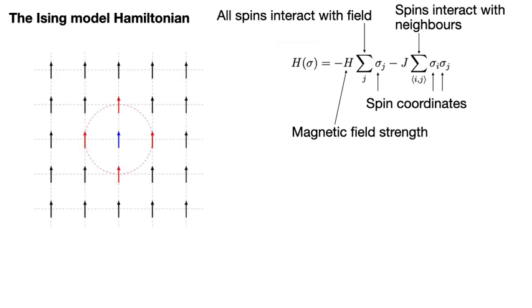In this diagram, the red spins indicate all the spins that the spin in blue interacts with. These are the spins that appear in that second term for the blue spin. The red spins are the so-called first coordination sphere of the blue spin. They are the four spins that are nearest to the blue spin as the red circle indicates.